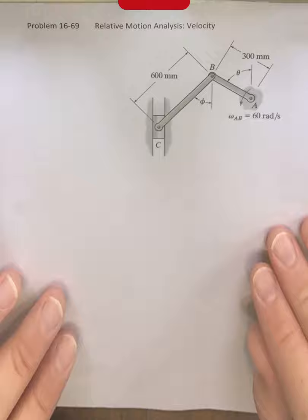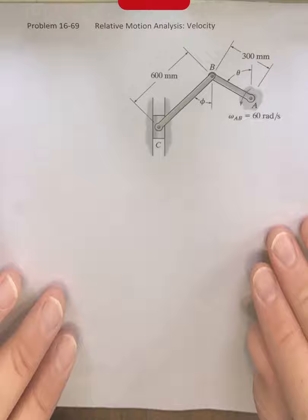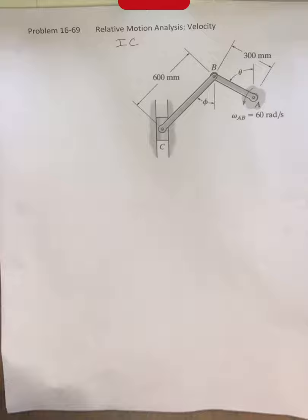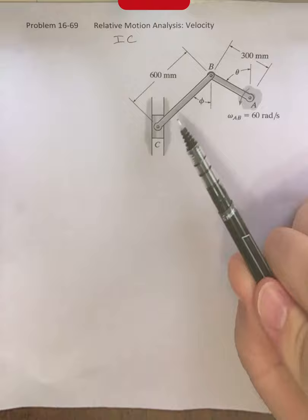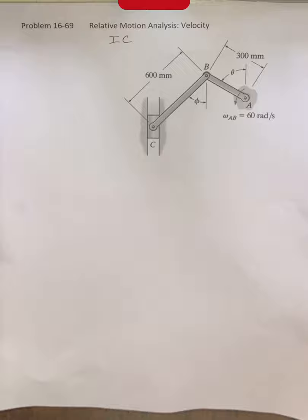The instantaneous center, or IC, as we will usually call it, refers to the fact that for an object that is undergoing general planar motion, that is going to be this link BC here, there is always going to be a point where we can find the object undergoing a pure rotation.